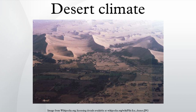An area that features this climate usually experiences less than 250 mm per year of precipitation and in some years may experience no precipitation at all. In some instances, an area may experience more than 250 mm of precipitation annually, but is considered a desert climate because the region loses more water via evapotranspiration than falls as precipitation.